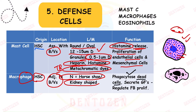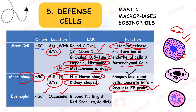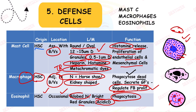Macrophages also secrete growth factors and regulate fibroblast proliferation. Eosinophils also originate from hematopoietic stem cells but are only occasionally seen in the periodontal ligament. They have a bilobed nucleus and bright red granules that stain with acidic dyes like eosin. Their function is phagocytosis.